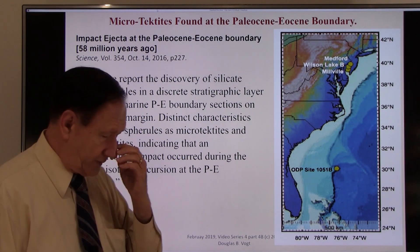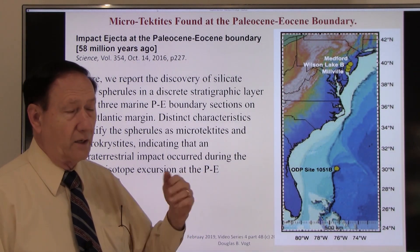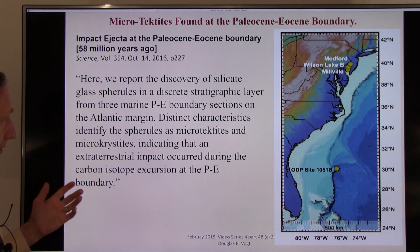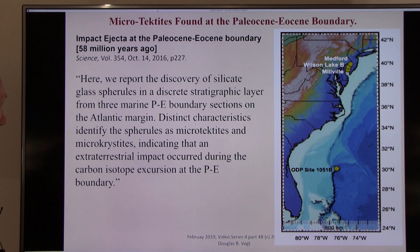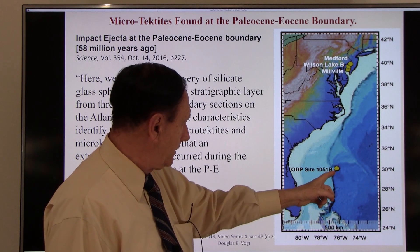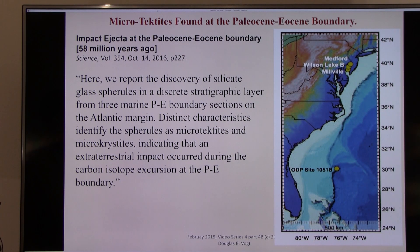Here's another example of a geology team trying to get famous by linking a crater to another extinction event. From Science: 'We report the discovery of silicate glass sphericals in a discrete stratigraphic layer from three marine Paleocene-Eocene boundary sections on the Atlantic' — off the coasts of New Jersey, Pennsylvania, Delaware, and Florida. The distinct characteristics identify the sphericals as micro-tektites, indicating that an extraterrestrial impact occurred during the carbon isotope excursion at the PE boundary — 58 million years ago. The iridium anomaly has also been identified at the PE boundary section at Zumaya, Spain, though it has been interpreted as volcanic in origin, which it can't be.